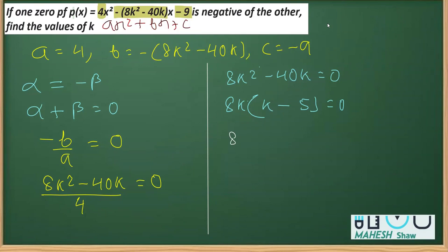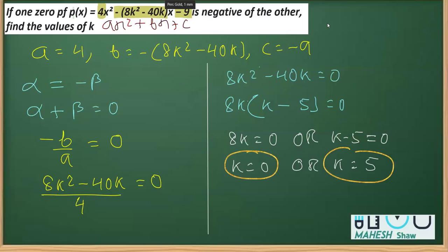So 8k = 0 or k - 5 = 0. From this, k = 0 or k = 5. So there are two possible values of k: k = 0 and k = 5. Before we declare the values, we must check something.